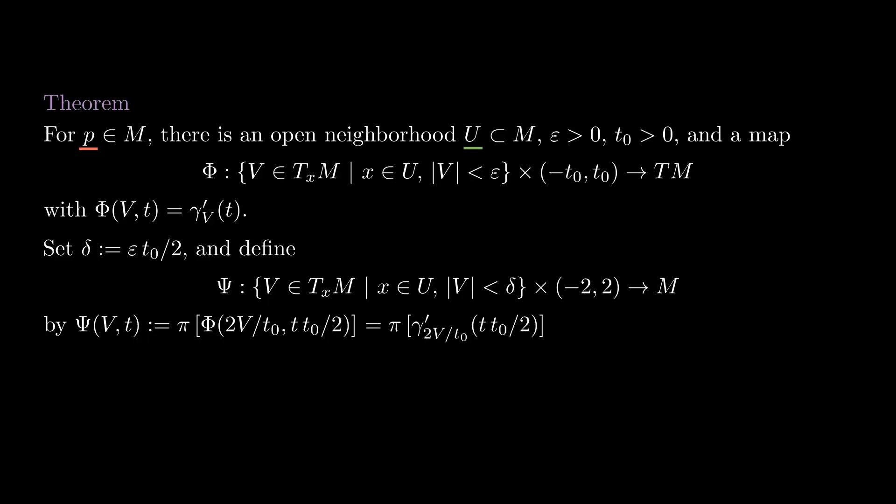Now remember that phi had an expression in terms of geodesics. This equals the base point of gamma 2v over t0 prime at the time tt0 over 2. This is a rather complicated expression, but by the homogeneity property, this is nothing more than gamma v at time t. The homogeneity property allowed us to extend the time of definition from minus t0, t0 to minus 2, 2 at the expense of working with vectors of smaller length. If we wanted to, we could have done the opposite. Work with arbitrarily long vectors at the expense of flowing only for a very short time.